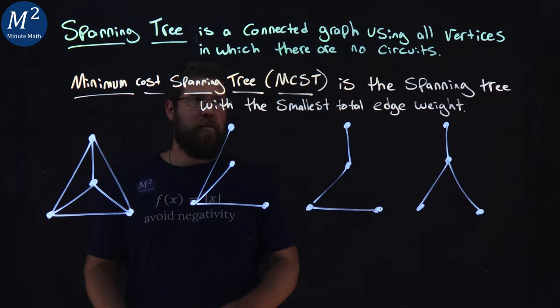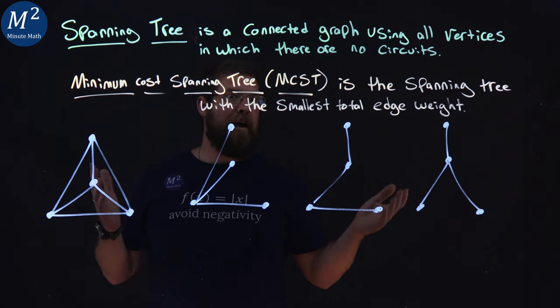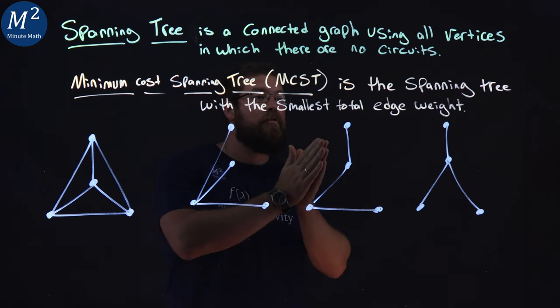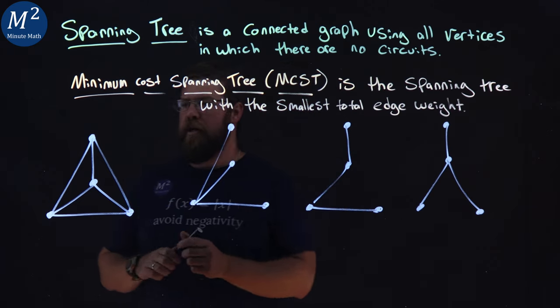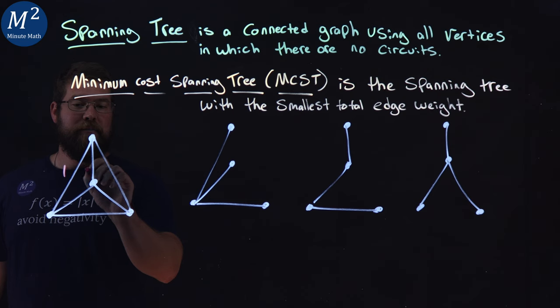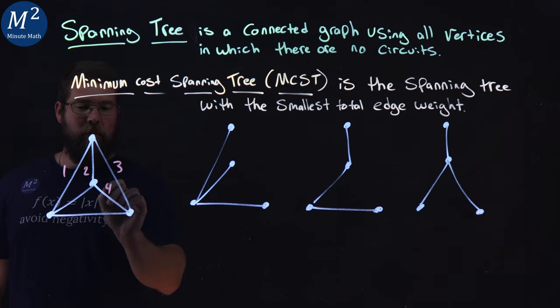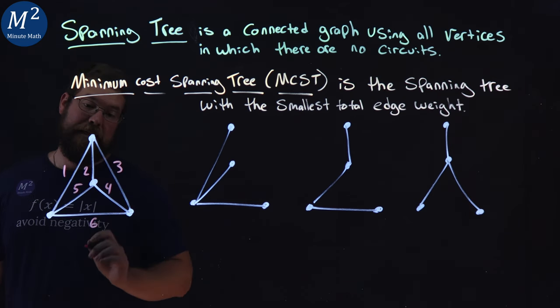Well, the minimum cost spanning tree is the spanning tree out of all the spanning trees we have with the smallest total edge weight. So we have some edge weights on here. Let's say we have a one, two, three, four, five, and six.